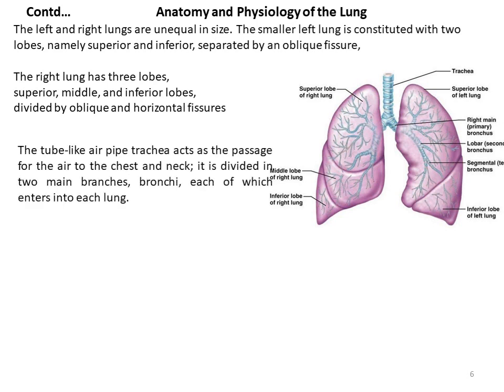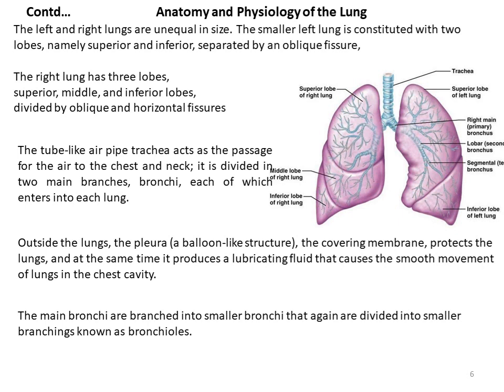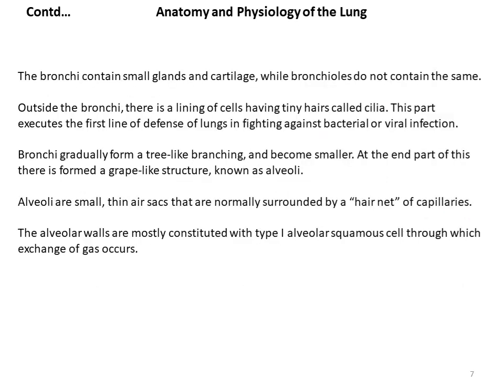The tube-like air pipe called trachea acts as the passageway for air to the chest and neck. It is divided into two main branches called bronchi, each of which enters into each lung. Outside the lungs, the pleura — a balloon-like structure — is the covering membrane that protects the lungs and at the same time produces lubricating fluid that causes smooth movement of the lungs in the chest cavity. The bronchi contain small glands and cartilage while bronchioles do not contain the same. Outside the bronchi, there is a lining of cells having tiny hairs called cilia. This part executes the first-line defense of the lung in fighting against bacterial and viral infections.